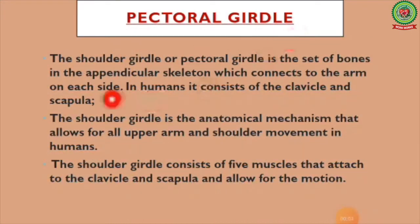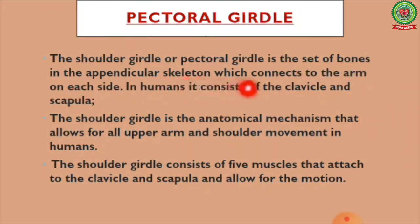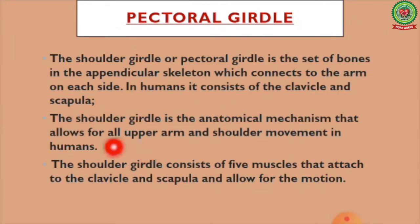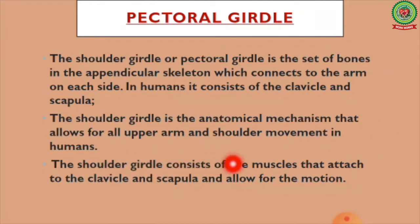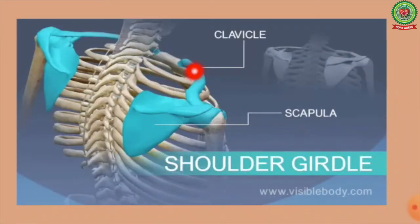Starting with the pectoral girdle: the shoulder girdle or pectoral girdle is the set of bones in the appendicular skeleton which connects to the arm on each side. In humans it consists of the clavicle and scapula. The shoulder girdle is the anatomical mechanism that allows for all upper arm and shoulder movement. It consists of five muscles that attach to the clavicle and scapula to allow motion.